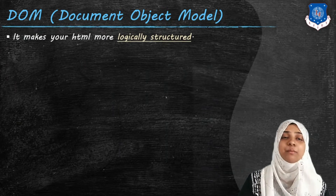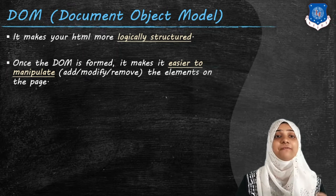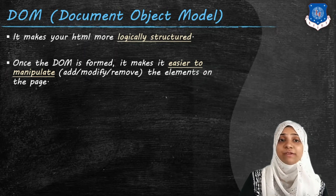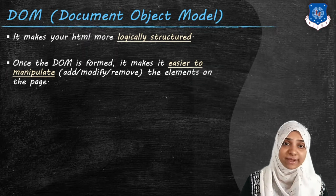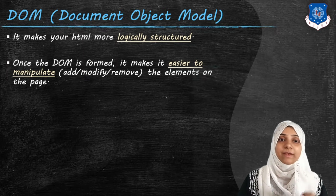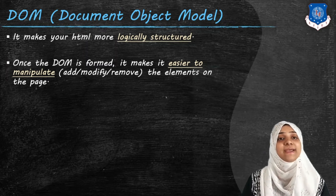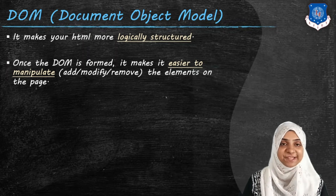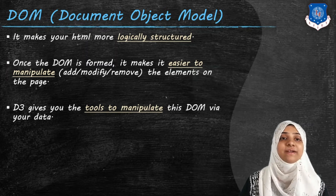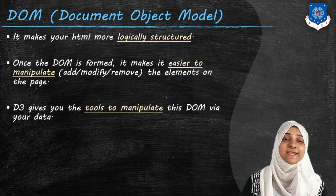DOM makes HTML more logically structured and easier to manipulate elements. For instance, if I want to add a paragraph inside a body that has a div tag, I must know the hierarchy: document, then HTML, then body, then inside the div — at that location I can add a new paragraph or p tag, remove tags like h1, or update and modify tags. D3 gives us tools to manipulate these DOM elements via data. If data has only 3 elements, 3 paragraphs will be displayed; if data has 10 elements, 10 paragraphs will be displayed — dynamic behavior based on data.